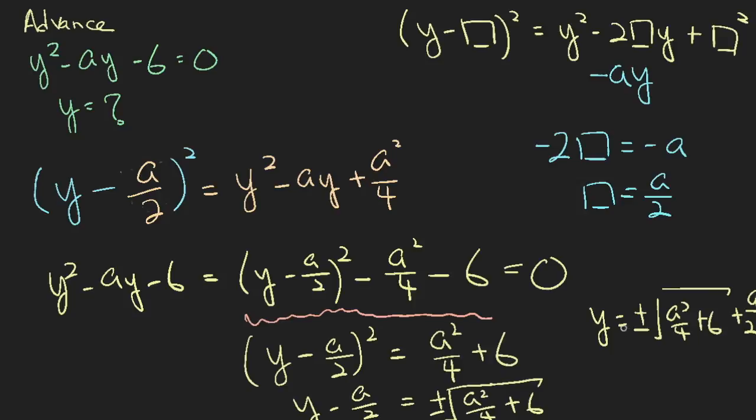So y has two values. One is when the square root takes positive, and the other answer is when the square root takes on a negative.